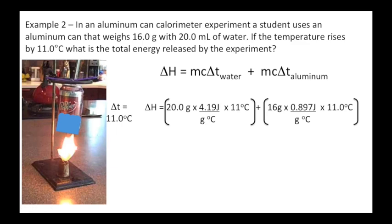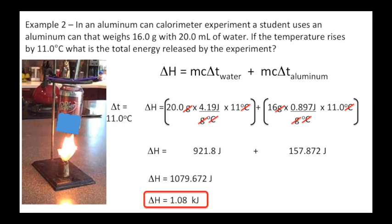So we cancel all of our units and I have 921.8 joules, 157.872 joules. That's 1079 joules, and my delta H is 1.08 kilojoules. Remember they just asked for how much energy is released, so we don't have to put negative in. If they had asked for molar enthalpy, then we would want to put it in.